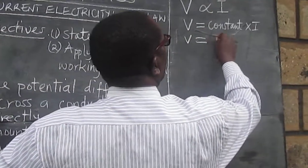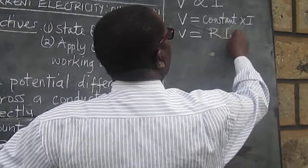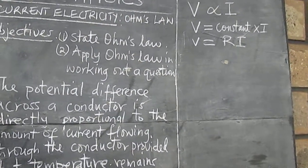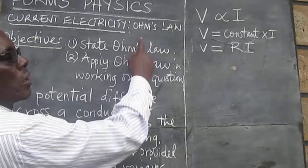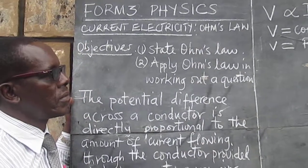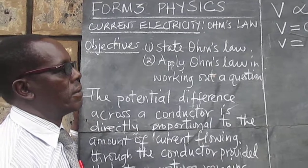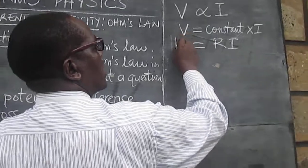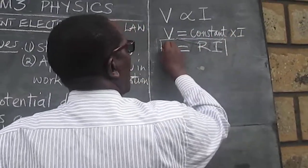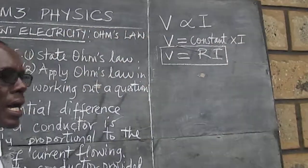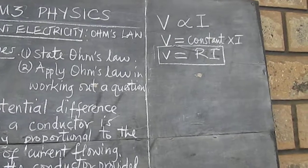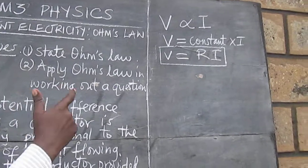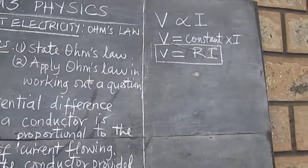So we write V equals RI. The standard unit for resistance is the Ohm, spelled O-H-M. So Ohm's law can be written mathematically as V equals RI, or IR — because it's a product, it doesn't matter what we write first.